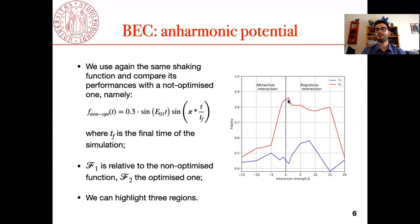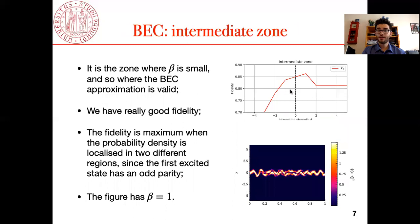The intermediate zone where the interaction strength is not high, the negative zone which is the attractive part with a high negative interaction strength, and the repulsive zone with a high positive interaction strength.